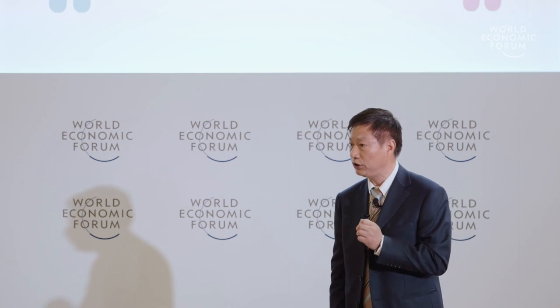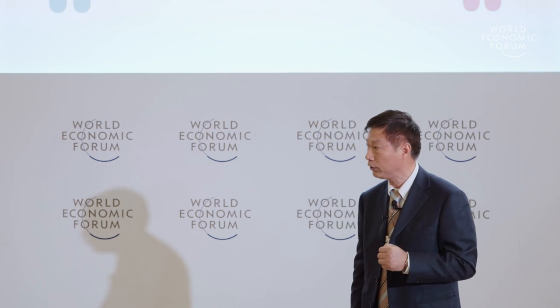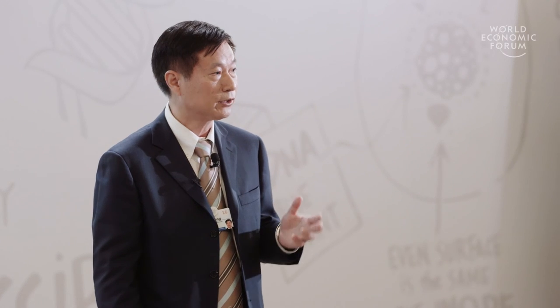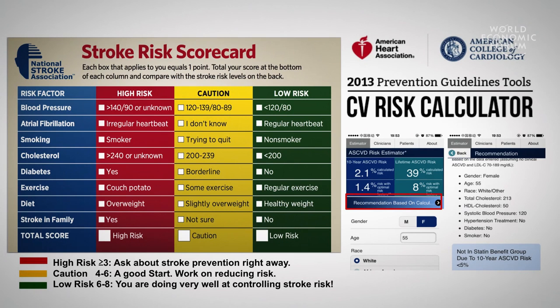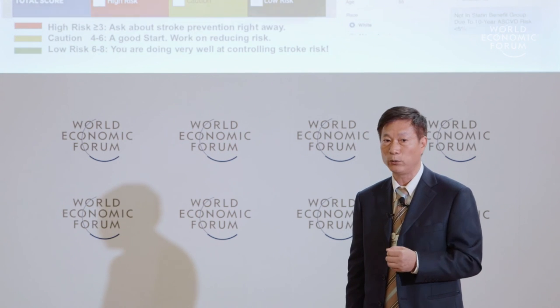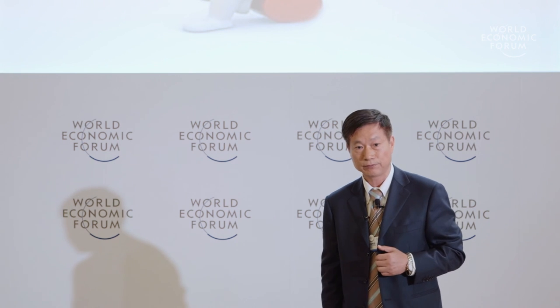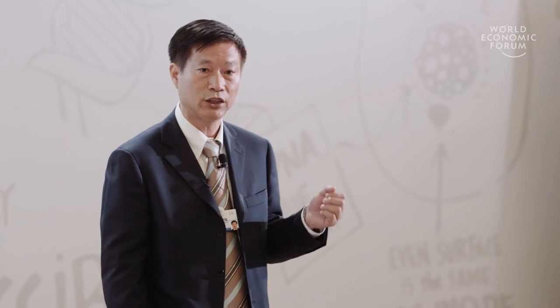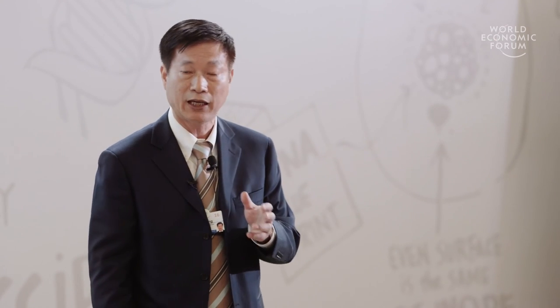Identification of high risk in an individual for stroke cannot rely on a single risk factor. For example, consider a hypertensive man aged 45 years versus a diabetic woman aged 55 years — who is at higher risk? A multi-variable prediction model is needed to solve this problem. Academic societies have produced cardiovascular risk prediction models, and the American Stroke Association developed a stroke risk scorecard, with similar work underway in China. However, these models are not commonly used in clinical settings, as they can predict stroke risk well at the population level but not precisely at the individual level.